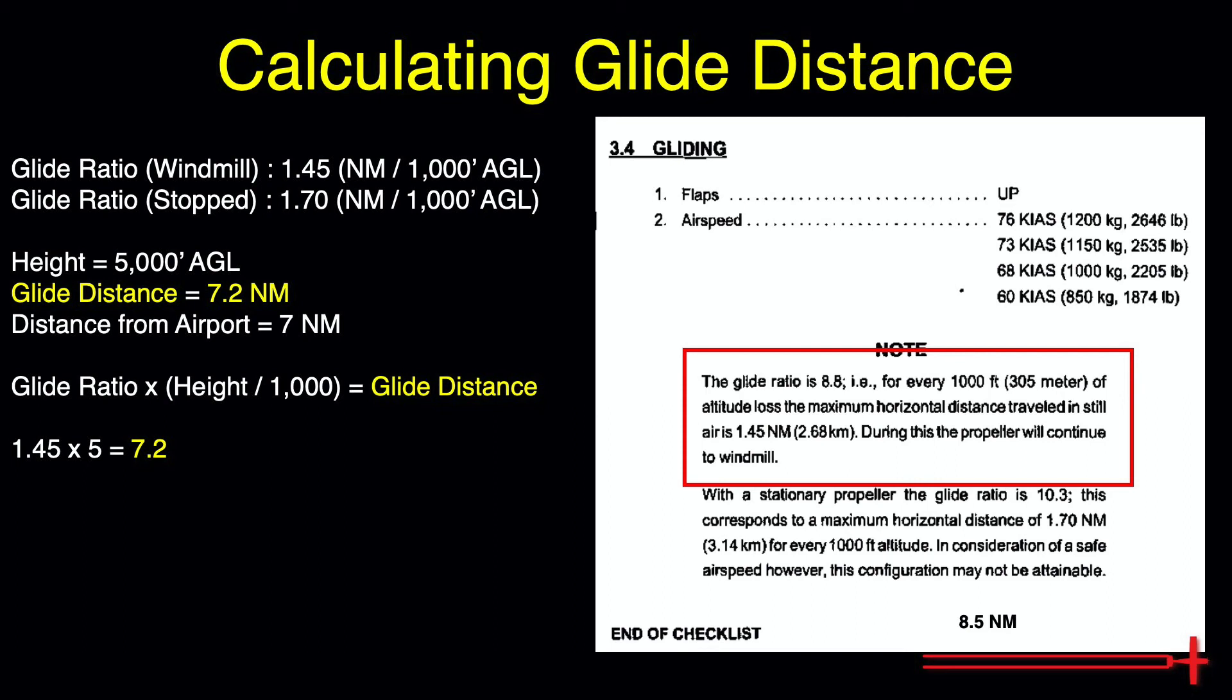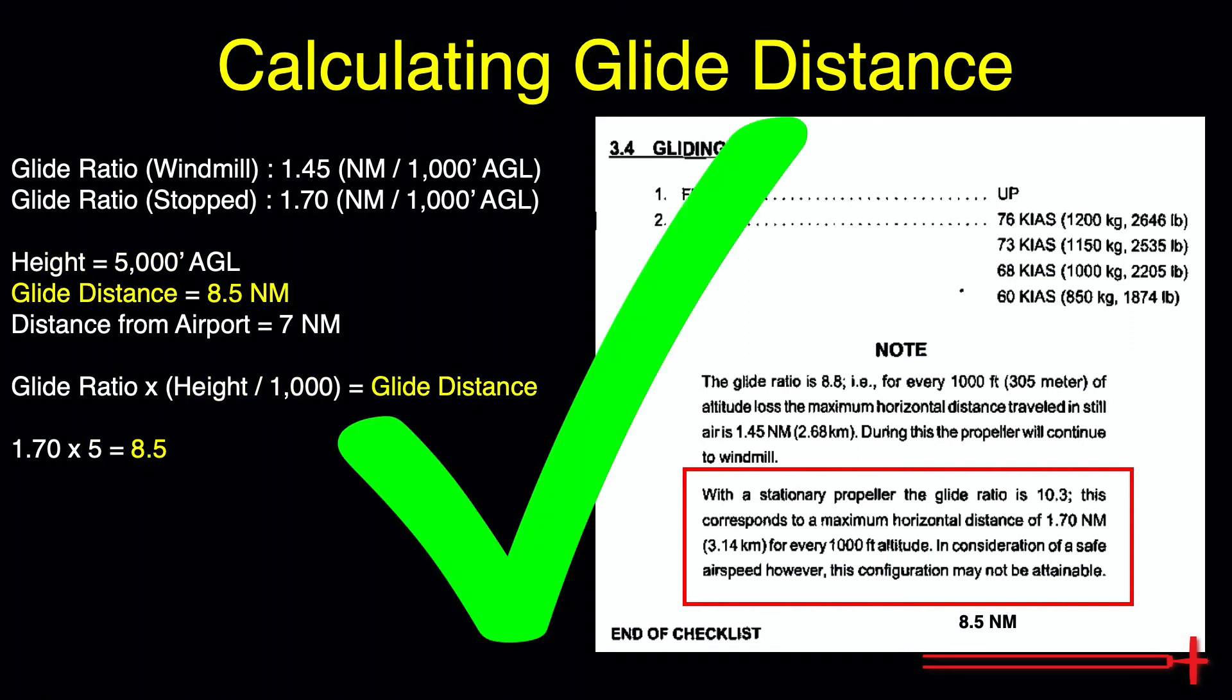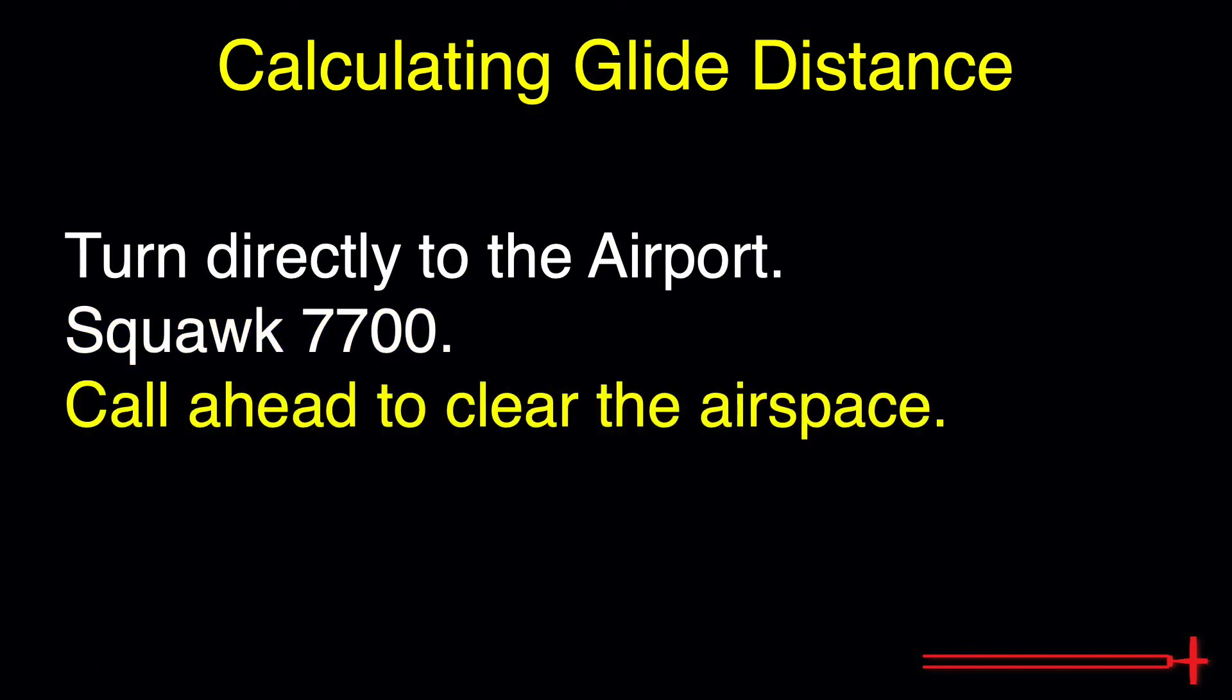With all that being said, it may be a good idea not to pass up a suitable landing spot directly down below if one is available. If the prop were totally stopped up, giving us a 1.7 glide ratio, that 5,000 foot altitude over terrain would leave us with an 8.5 nautical mile glide distance. This leaves us with a nice big buffer in case we fudge anything up while landing at our airport only 7 nautical miles away. In this case, we can turn directly towards the airport, squawk 7-7-0-0, and call ahead to alert anyone in the airspace of our intentions to land with no power.